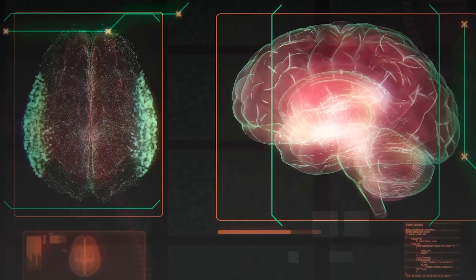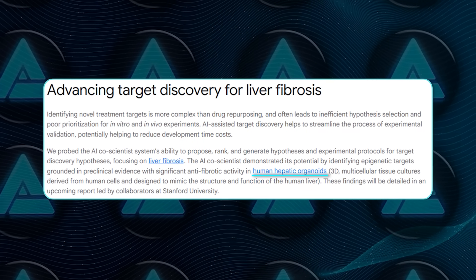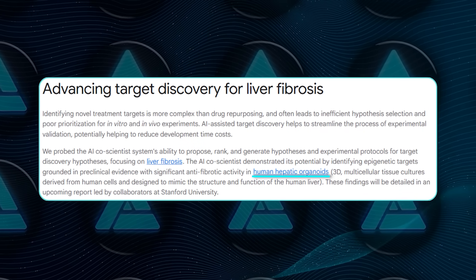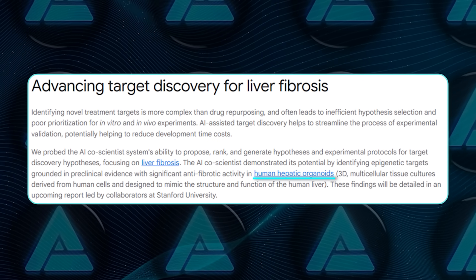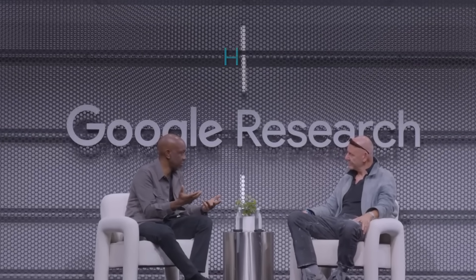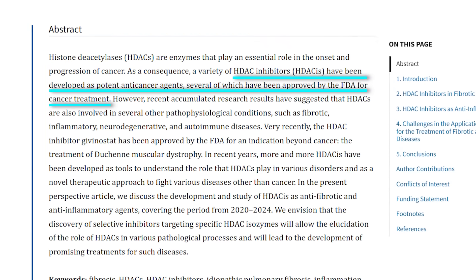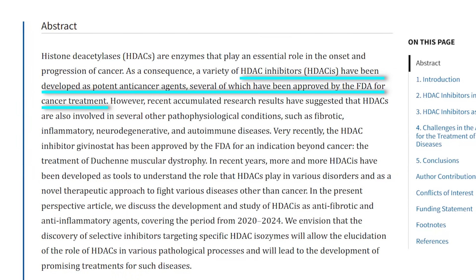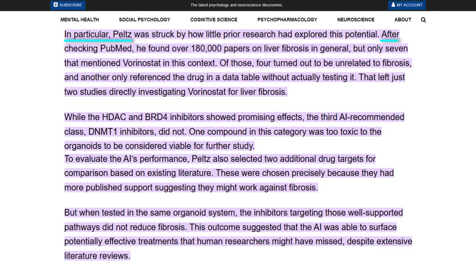The researchers tested all of this using human hepatic organoids, basically miniature livers grown from stem cells. These organoids can actually develop fibrosis when triggered with TGF-beta, so they're perfect for testing. And guess what? Two of the AI's drug classes worked beautifully. HDAC and BRD4 inhibitors both reduced fibrosis. One of them, Vorinostat, is already FDA-approved as a cancer treatment. In this model, it didn't just stop scarring, it boosted the growth of healthy liver tissue. Gary Peltz from Stanford, one of the lead researchers, said he was shocked. When he checked PubMed, he found over 180,000 papers on liver fibrosis.